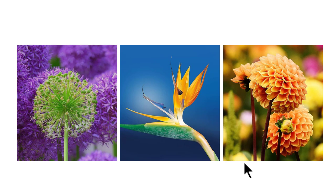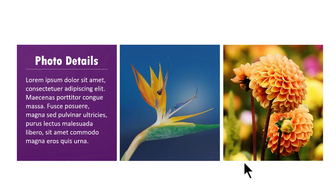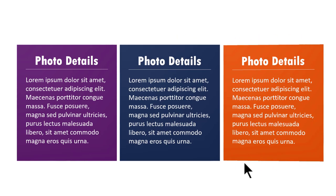As you can see, we have three photos. The details of the three photos are behind the photos. When we click, we reveal the details about the first photo, then about the second photo, and then about the third photo. This is the effect you will learn to create. Of course, you can replace the pictures of flowers with mug shots of employees and provide details regarding those employees. This is a fairly versatile layout you can use in any number of situations.